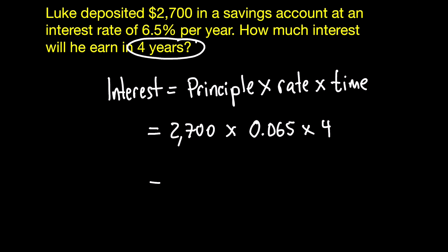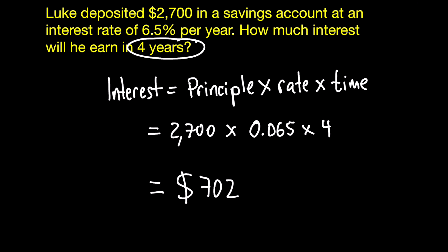And what this is going to tell you is how much interest Luke earned over four years, having this amount of money in a savings account. And the answer is — sorry — $702.